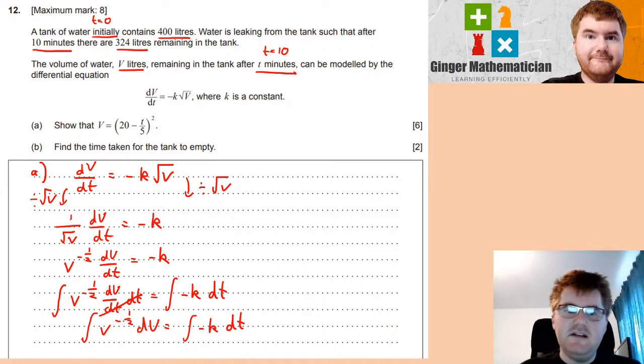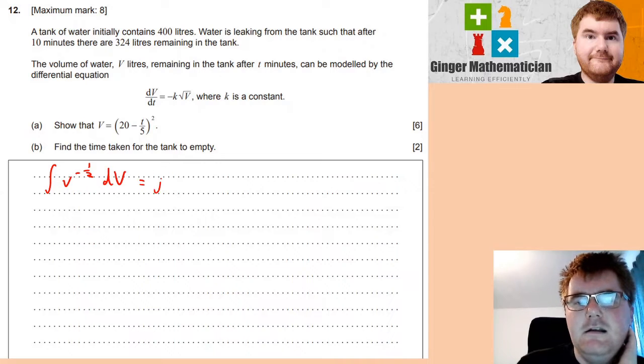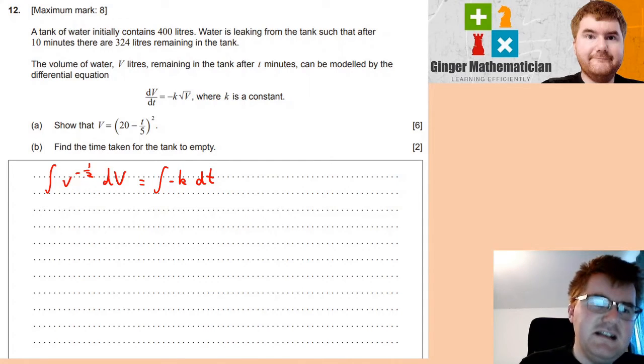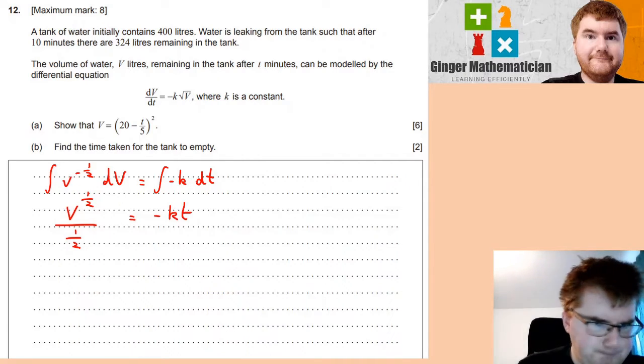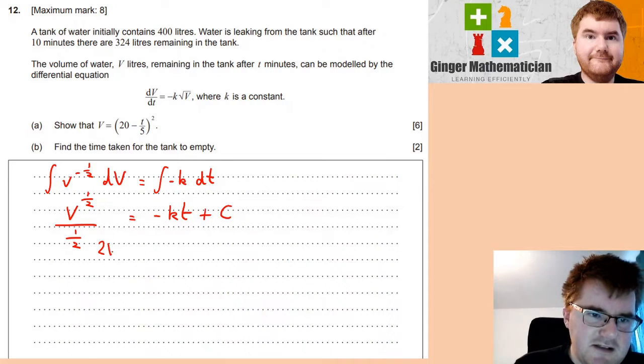So, we're going to do the integral of V to the power of minus a half dV by dT with respect to T equals the integral of minus K dT. Now, this has the effect these dTs cancel, so to speak, which means we get this nice integral here then, V to the power of minus a half dV equal to the integral of minus K dT. Let's think how this integrates. Remember our integration rules, we add one to the index. So, we add one to this. So, minus a half plus one is a half, and then divide by the new index. And on the other side, if we integrate with just a constant, then we're just adding a T in this case, plus our constant of integration. Divide by a half is the same as timesing by two. So, we can write this as 2V to the power of a half equals minus KT plus C.